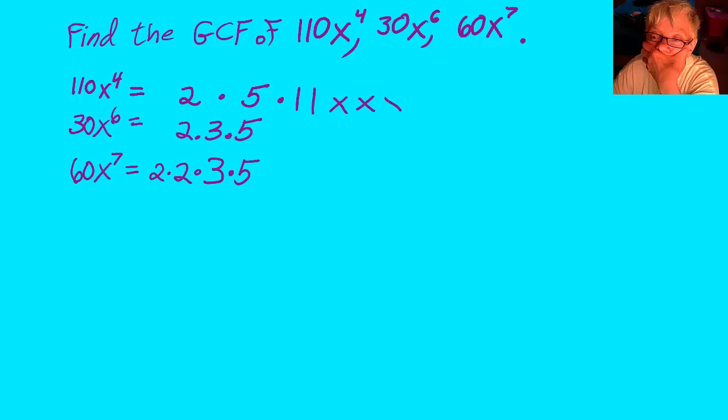Now come the x's. 110 has 4 x's multiplied by each other, 30 x to the sixth has 6 x's multiplied together, and 60 x to the seventh has 7 x's multiplied together.